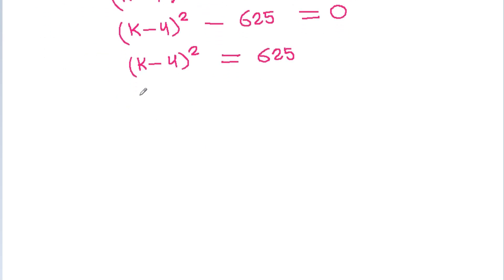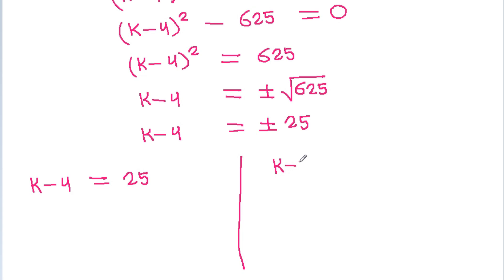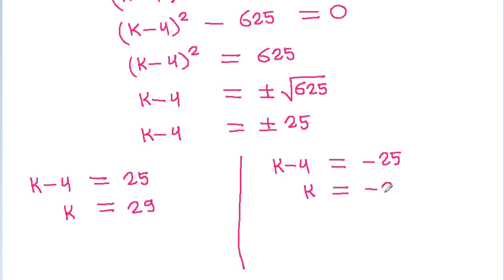So (k minus 4) squared equals 625, meaning k minus 4 equals plus or minus 25. Therefore, either k minus 4 equals 25, giving k equals 29, or k minus 4 equals minus 25, giving k equals minus 21.